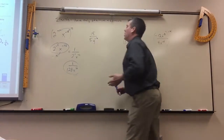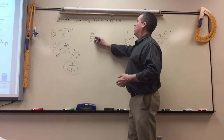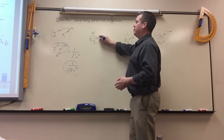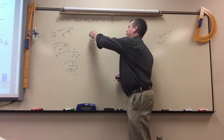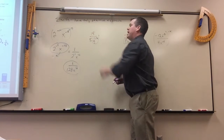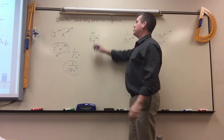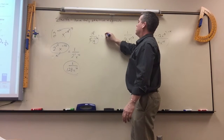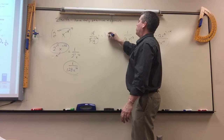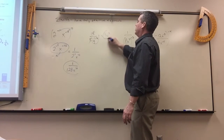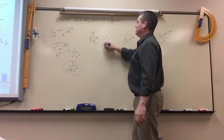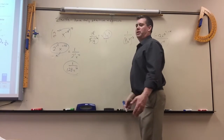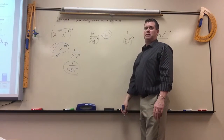This one has a negative exponent on the bottom, so you move it up. 15 over 5 simplifies to 3. So it would be 3y to the 3rd. There's nothing left on the bottom — you could put a 1 there, but you don't need it.